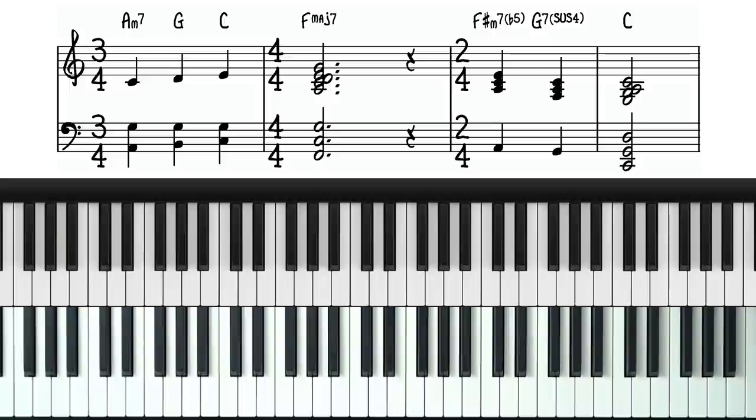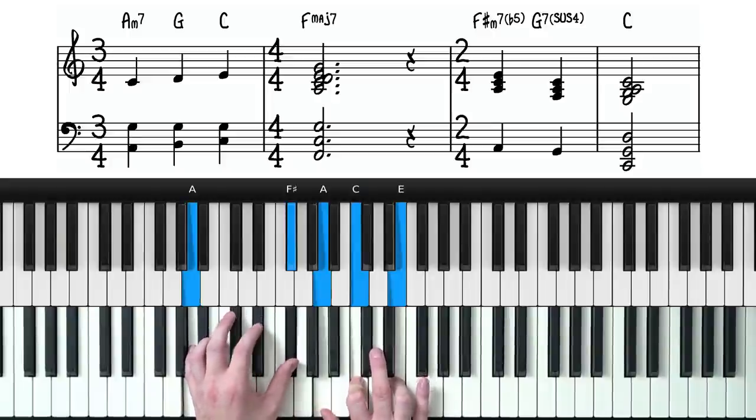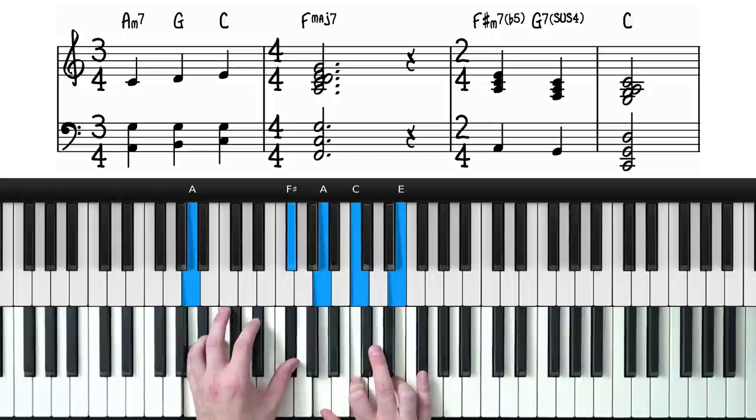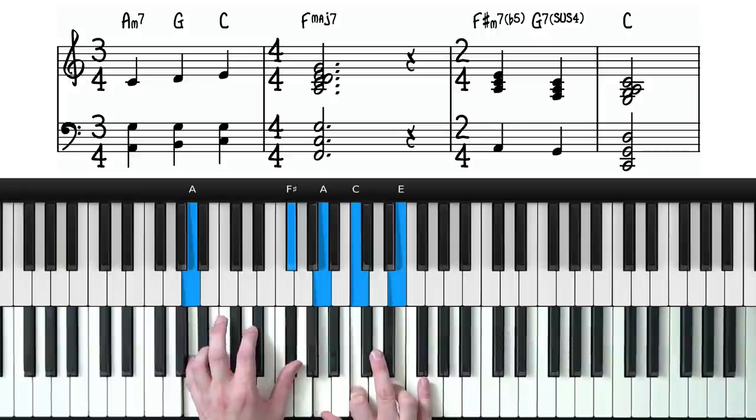So what have we got going on there? Well, we start with this. This is an F sharp minor 7 flat 5. We've got the root, flat 3, flat 5, flat 7, and also the flat 3 in the bass. Which means we're playing this chord in its first inversion.